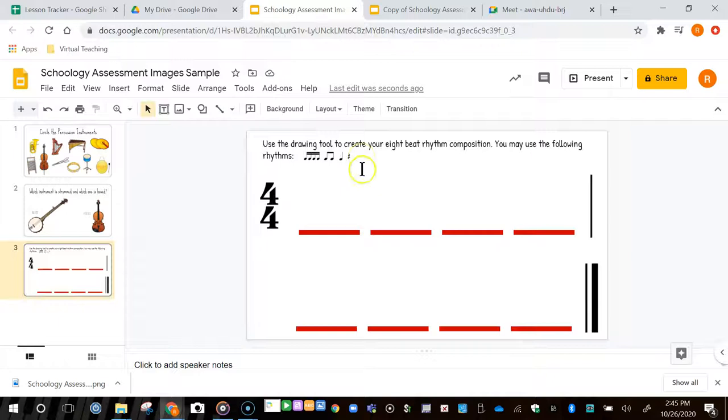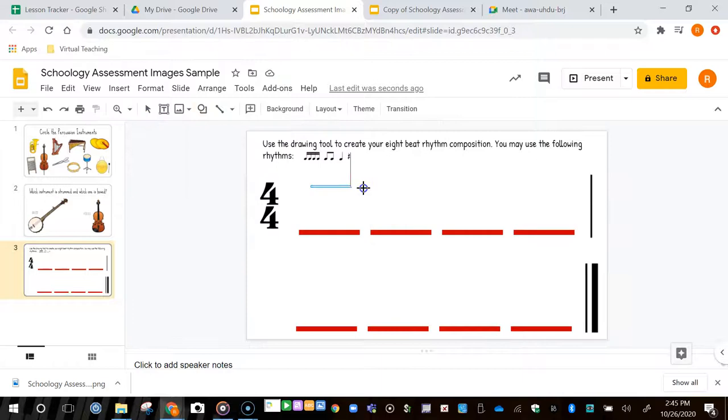I want to show you how you can manipulate these beat bars to create them for your students. They're actually just rectangle shapes. I started with one and drew a rectangle by clicking and dragging, colored it red, and made the border transparent.